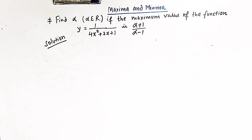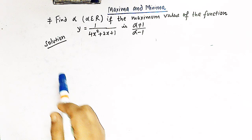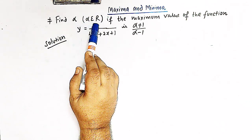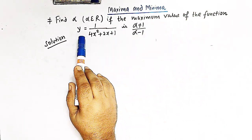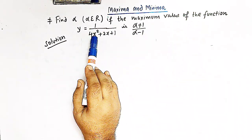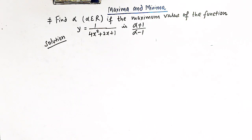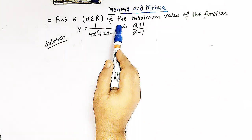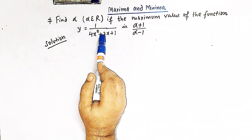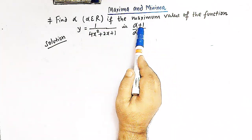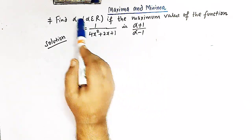Hello viewers, in today's session we are going to discuss another important problem from maxima and minima. We have to find alpha, where alpha belongs to the set of real numbers, if the maximum value of the function y = 1/(4x² + 2x + 1) is (alpha + 1)/(alpha - 1). We are given this function y(x) and the maximum value is given as (alpha + 1)/(alpha - 1), where alpha is to be calculated.